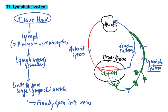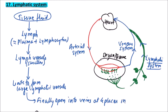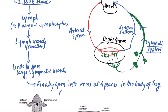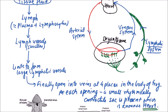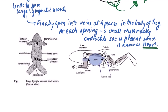These larger lymphatic vessels finally open into veins at four places in the body of the frog. At each opening, a small rhythmically contractile sac is present, which is known as a lymphatic heart. So there are two pairs of lymphatic hearts.